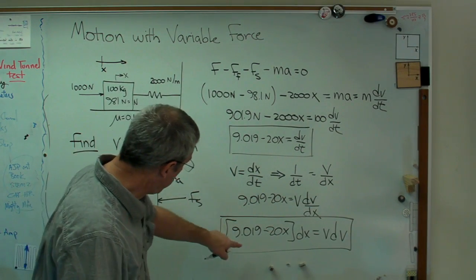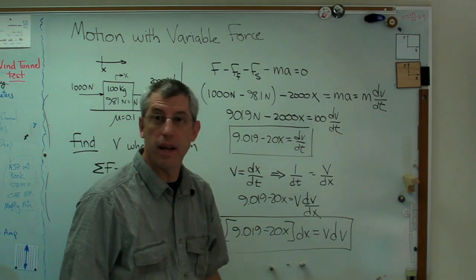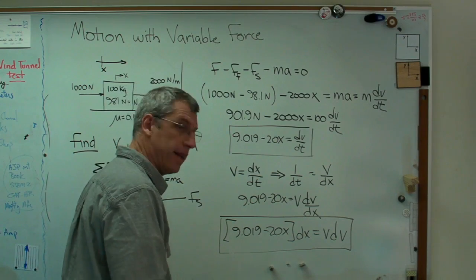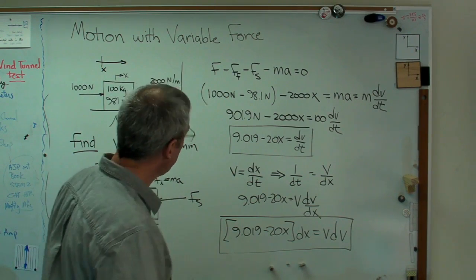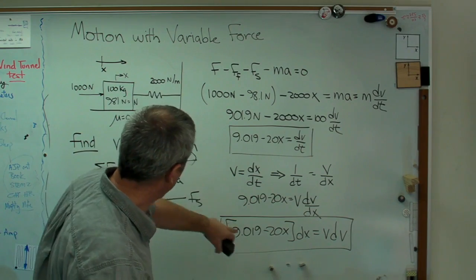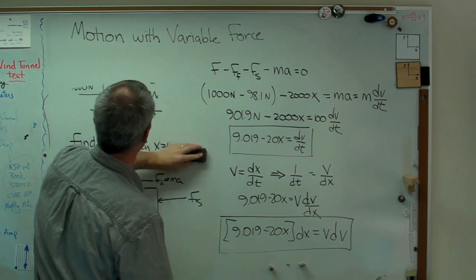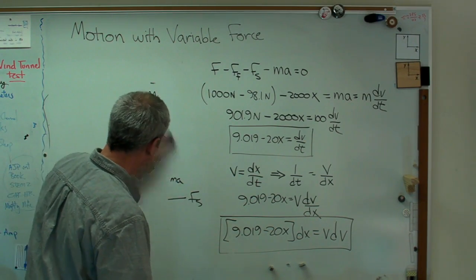Now I've got x's on one side and v's on the other side. Now I've got something I can work with. So what I'm going to do here on my little board is I'm going to erase this stuff and I'm going to start working over here again.